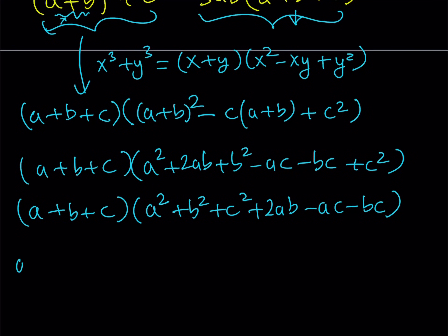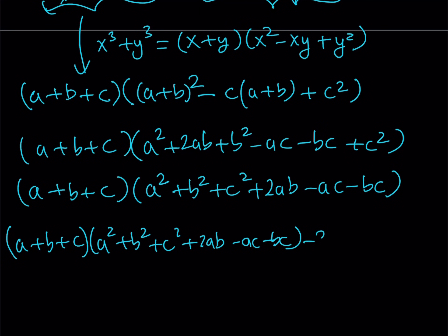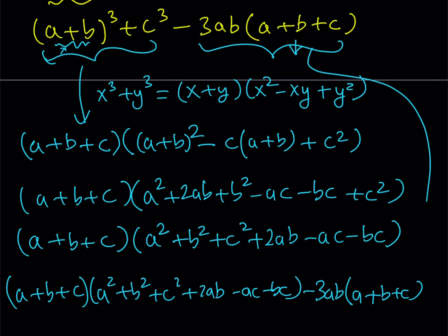So I have a plus b plus c multiplied by a squared plus b squared plus c squared plus 2ab minus ac minus bc, and then I'm supposed to subtract minus 3ab times the quantity a plus b plus c. And then what we're going to do here is, since a plus b plus c is a common factor, we're going to take that out.